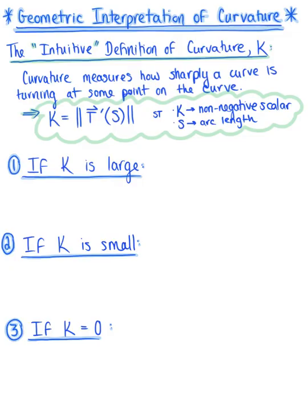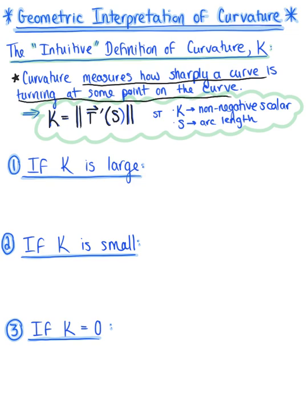Here is our geometric interpretation of the intuitive definition of curvature. Curvature measures how sharply a curve is turning at some point, and is defined as the non-negative scalar kappa, equal to the magnitude of the rate at which the unit tangent vector changes with respect to arc length. Note that while the unit tangent vector depends on the orientation of the curve, curvature does not depend on orientation — it depends on the shape of the curve and measures how sharply it is turning.